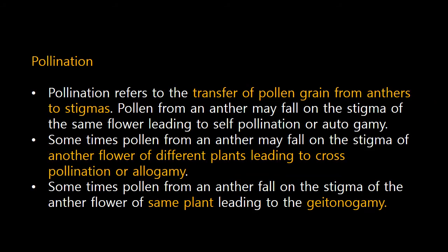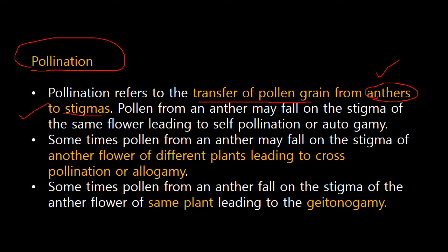Before going into self-pollination, we'll just have a glance at what pollination is. Pollination is basically the reproduction involving male and female gametes. Botanically, it is defined as the transfer of pollen grains from anthers — which is the male reproductive part of the flower — to the stigma, which is the female part. Pollen from an anther may fall on the stigma of the same flower, leading to self-pollination.